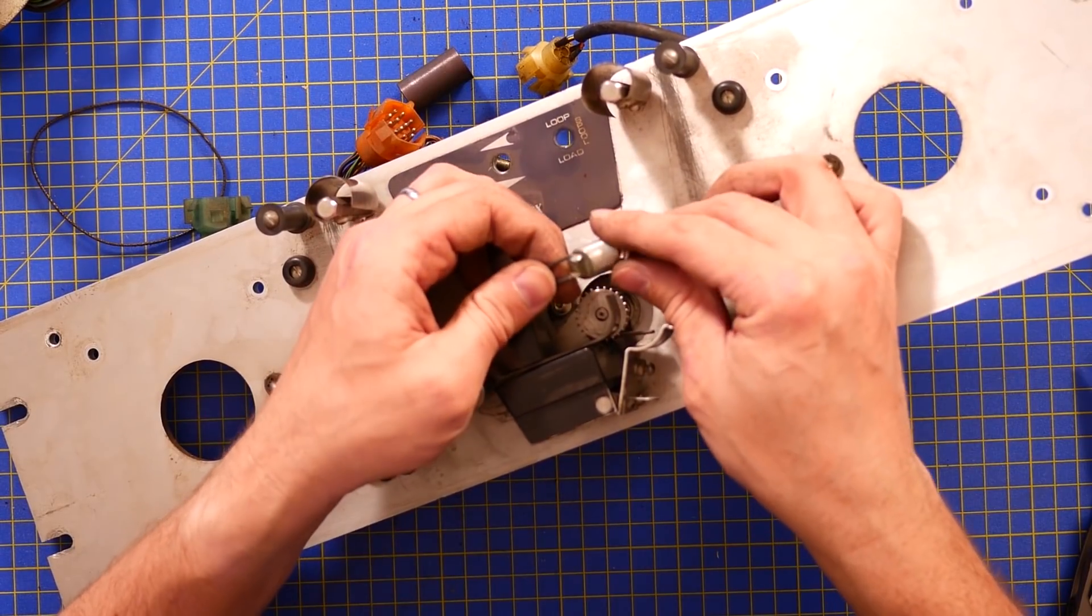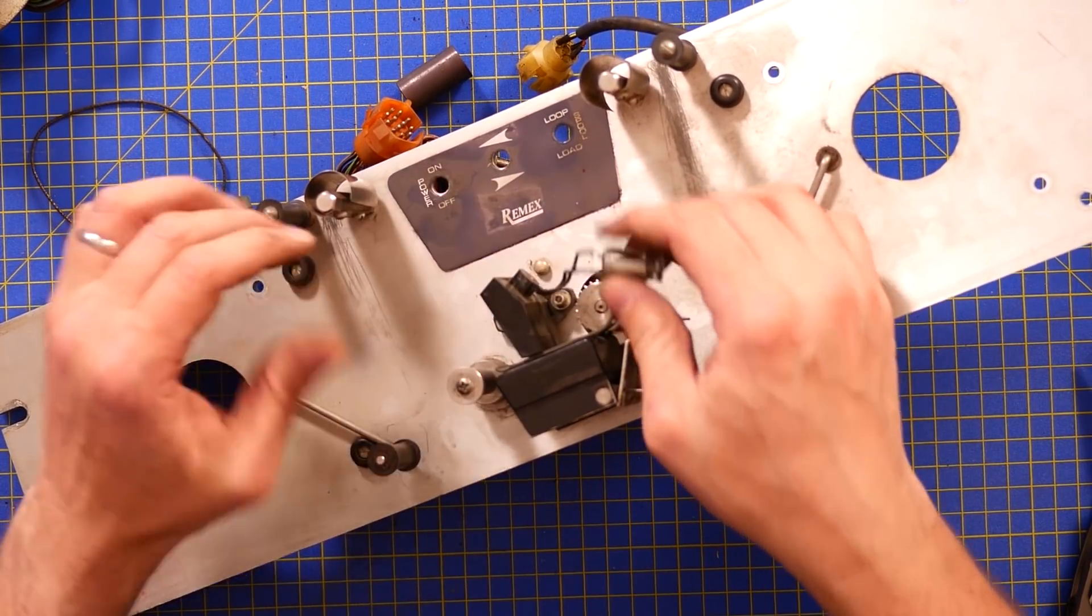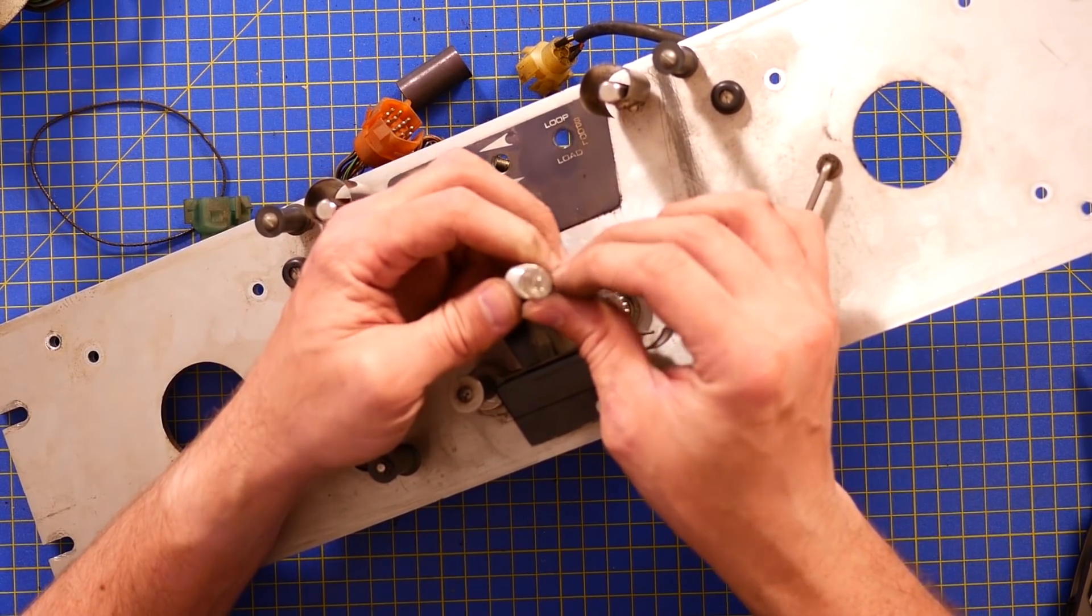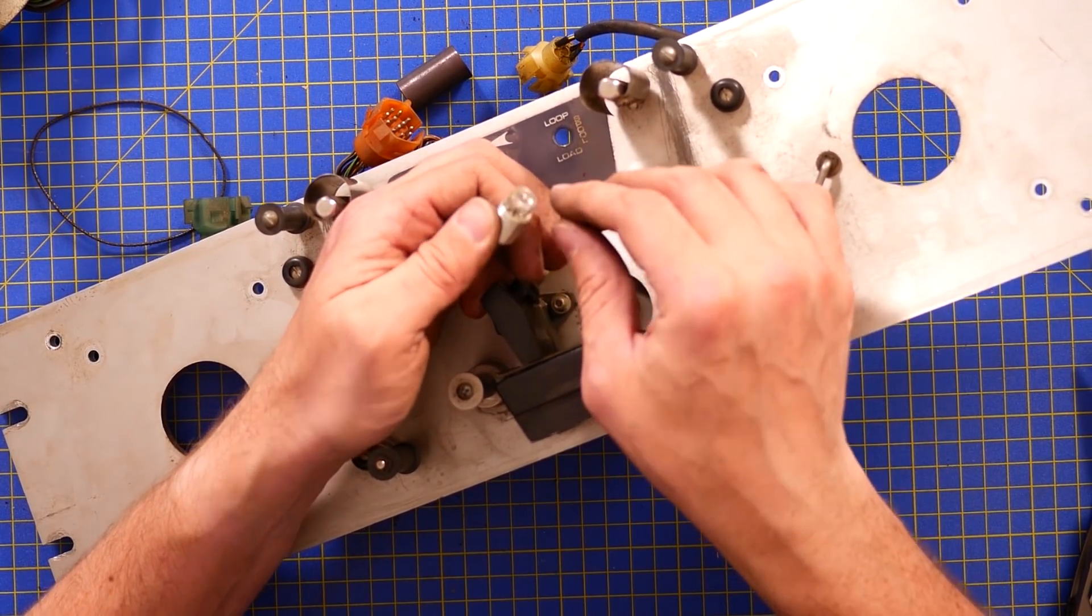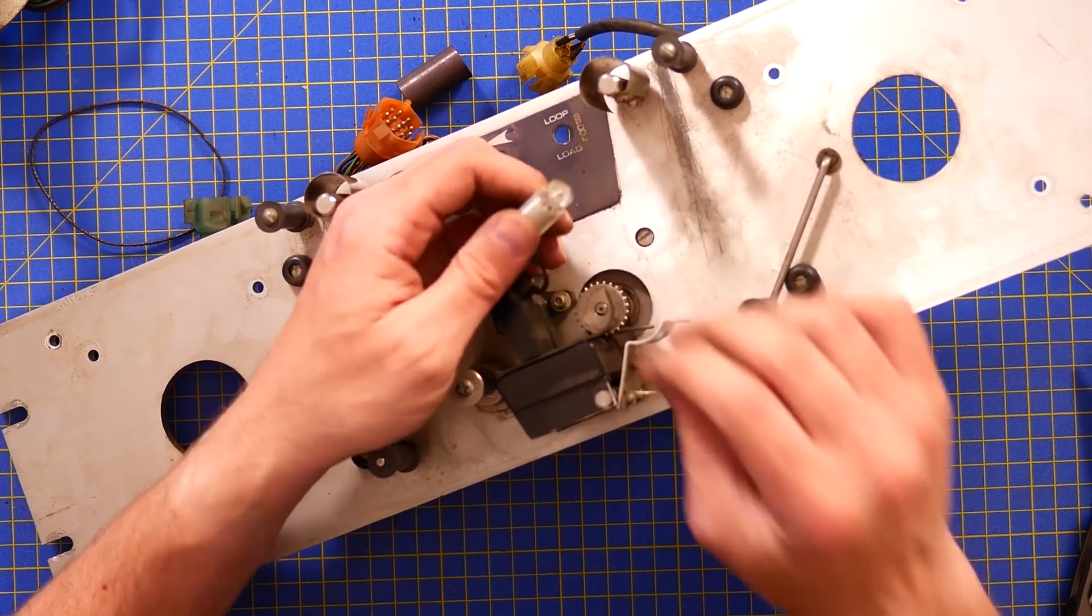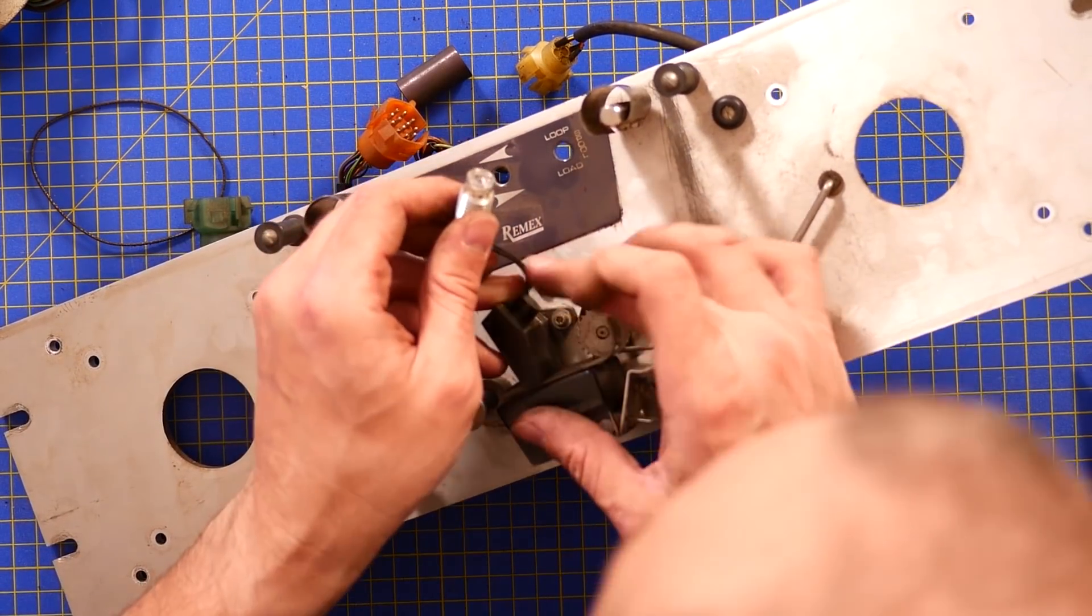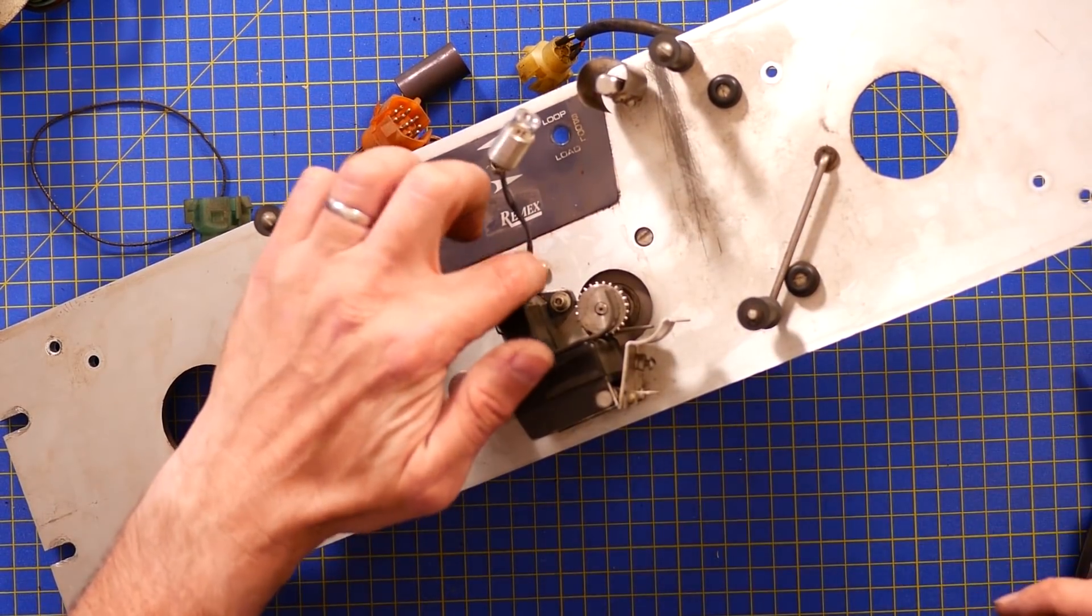And it's actually soldered on. I assumed that would be a lamp holder. But no, sure enough, that is the lamp with a little lens on the front. So it's a very specialist lamp to have that lens on there. And it just shines into here.